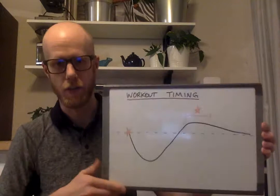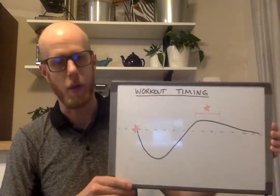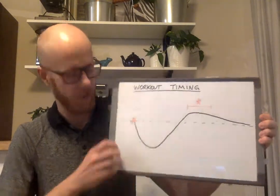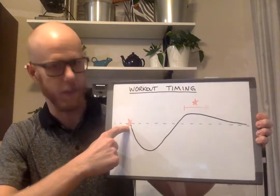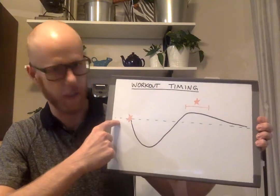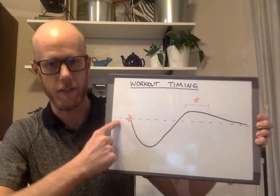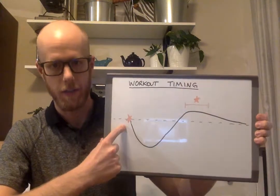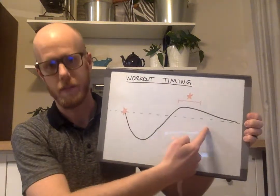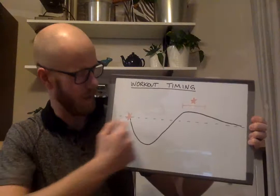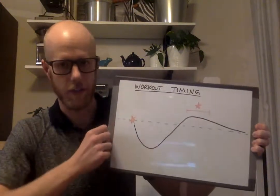So this is essentially what happens to your body after you do a hard workout. Our first hard workout is this red star here and the green dotted line down the middle is our current fitness level. So this is today, this is down the road into the future. That green dot is what our current fitness level is.